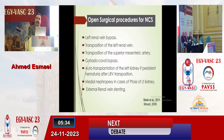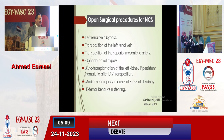Drug therapy includes aspirin or ACE inhibitors. Open surgical procedures for Nutcracker syndrome include left renal vein bypass, transposition of the superior mesenteric artery or left renal vein, gonadal bypass especially when the gonadal vein is sizable, autotransplantation of the left kidney for persistent hematuria after left renal vein transposition, medial nephropexy when the kidney is located laterally causing traction of the left renal vein, and external renal vein stenting.